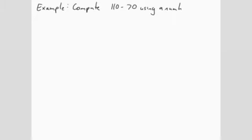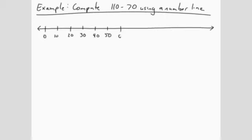Compute 110 minus 70 using a number line. Your intuition should kick in and suggest that multiples of 10 is the right choice. We start at 0, move 110 to the right,